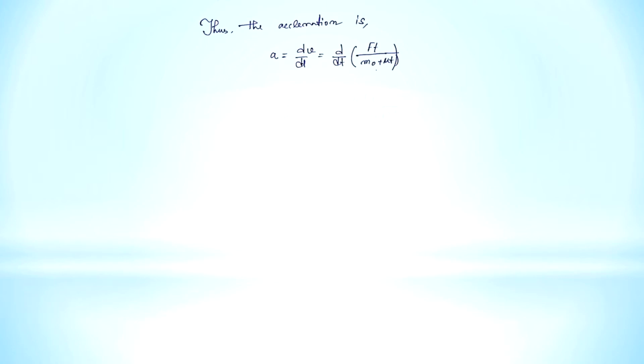And we get a = F/(m₀ + μt) - μFt/(m₀ + μt)². This equals (μFt - μFt + m₀F)/(m₀ + μt)². The μFt terms cancel each other. So we can write m₀F/(m₀ + μt)².